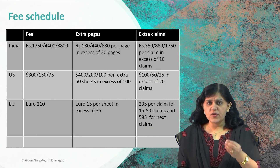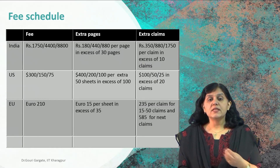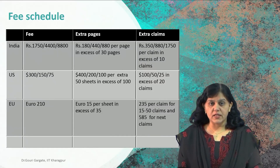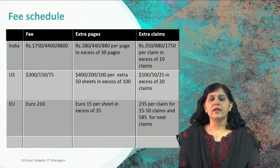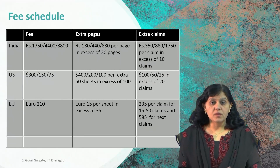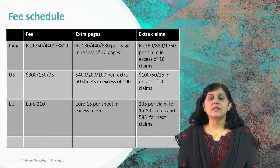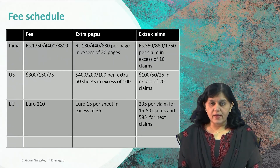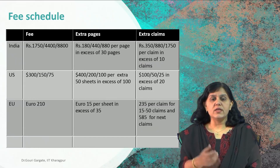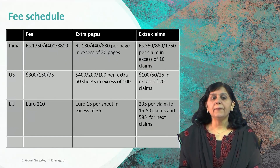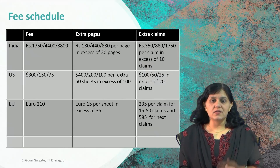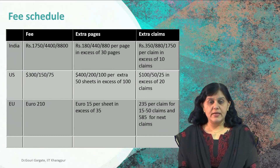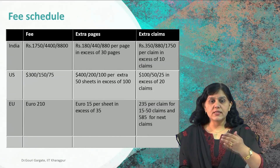If you are a small entity, MSME registration — whatever certificate is there — is mandatory, and you have to provide it when filing the patent under the small entity category. If you want to file a patent under the startup category, you have to show the certificate that you are enrolled under startup. For a natural person, obviously, no specific certificate is required. But when claiming small entity or startup category, you have to give the relevant certificate supporting the application.